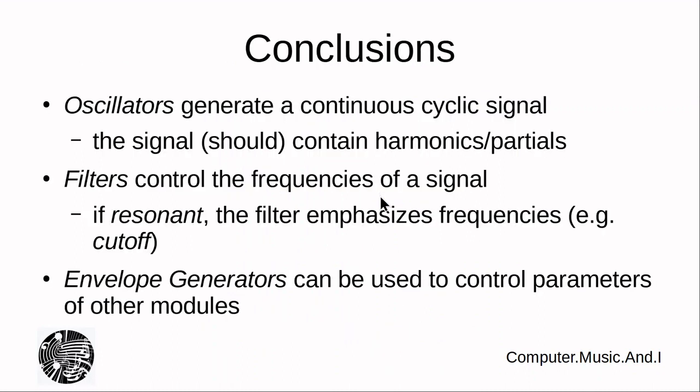So, let's try to conclude that. We've learned about oscillators, and oscillators generate a continuous cyclic signal. This signal should be rich, and it should contain harmonics and partials that can be shaped.